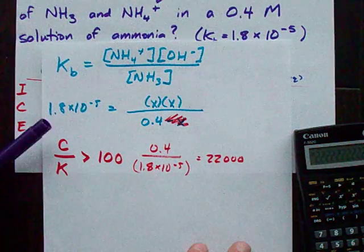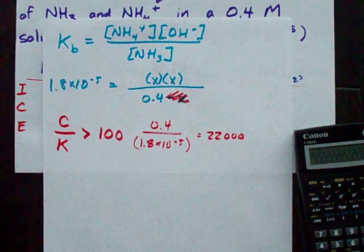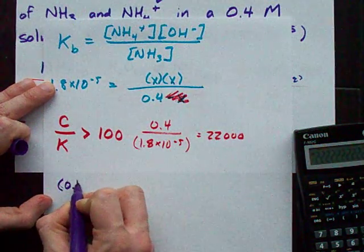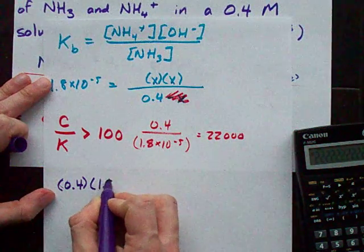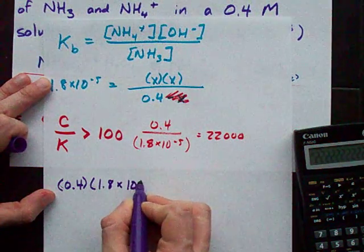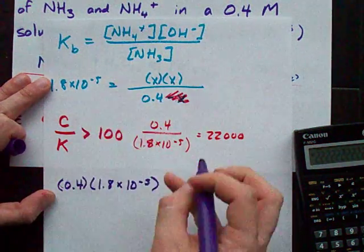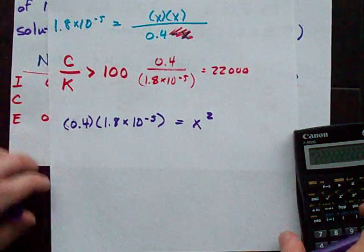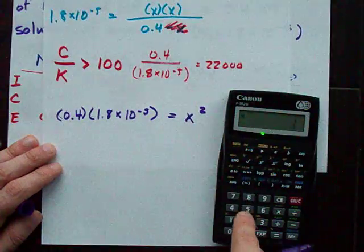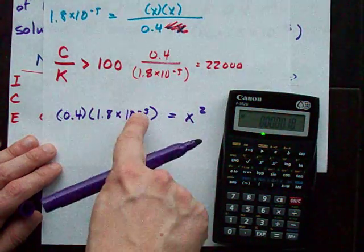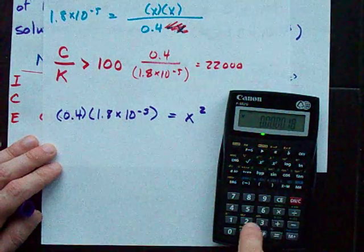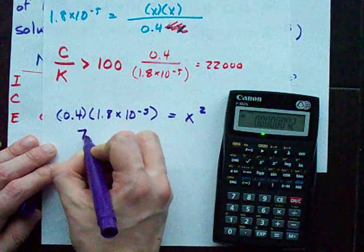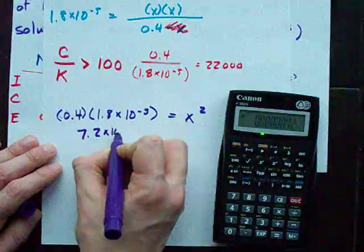The deal here is that that simplifies our expression greatly. Now, how do you undo division by 0.4? You multiply by 0.4. 1.8 times 10 to the minus 5 times 0.4 on the left equals x squared. Let's figure out what that is. 1.8 times 10 to the power of minus 5 times 0.4 gives me 7.2 times 10 to the minus 6.